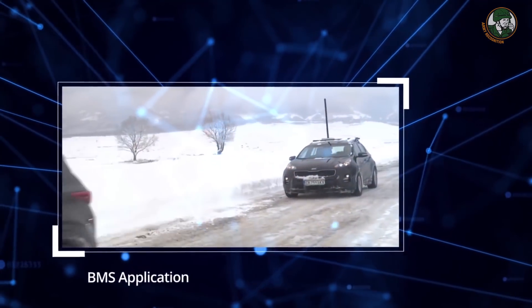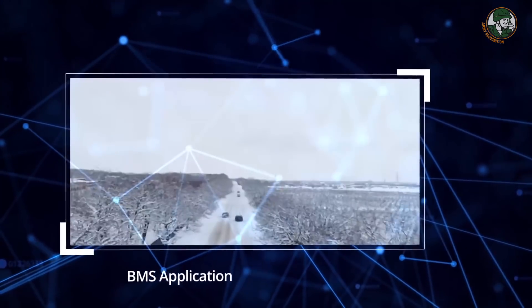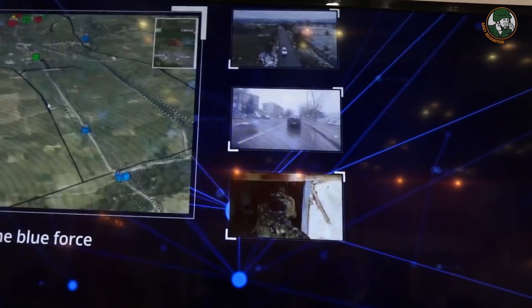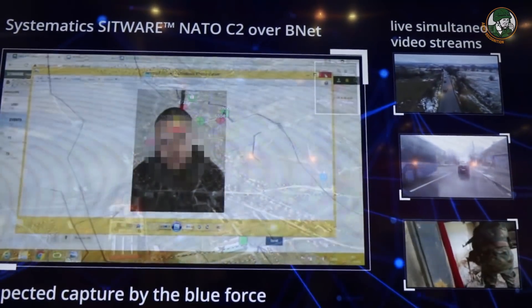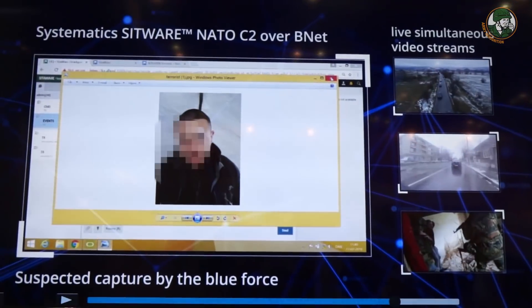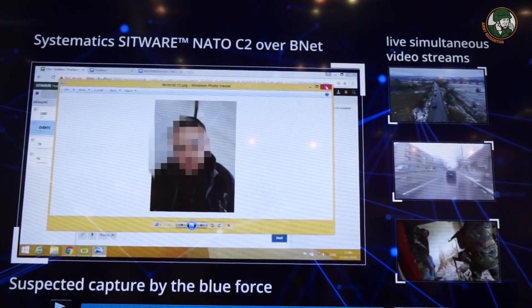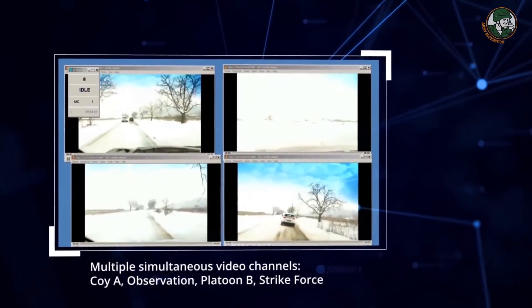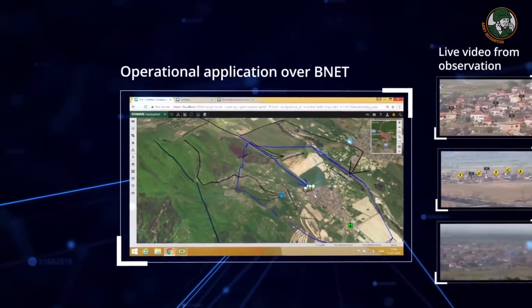Here we see again how we serve a tactical network with applications of video and voice. For example, how they catch a suspect — they take a photograph and transfer his picture over the tactical network to Interpol, like FTP, just as you would do on the Internet at the office, along with different streams of video.